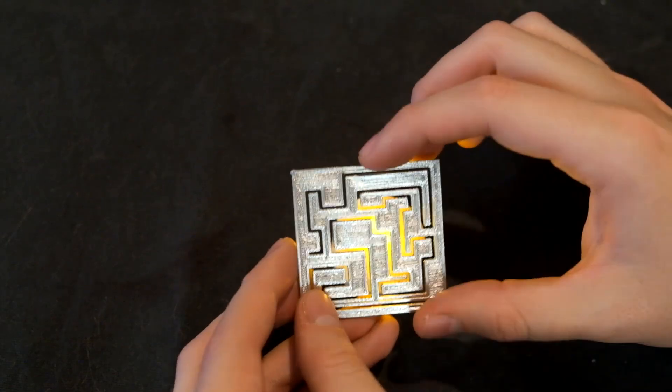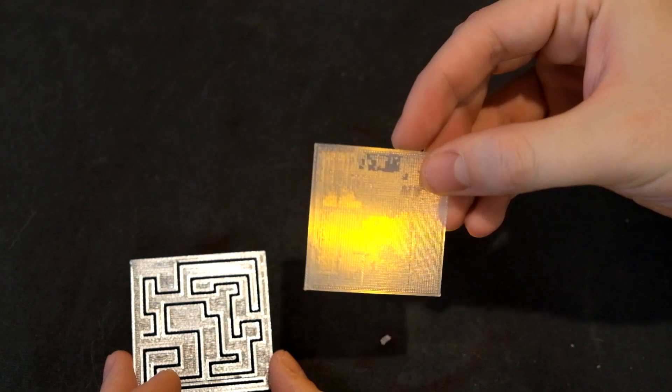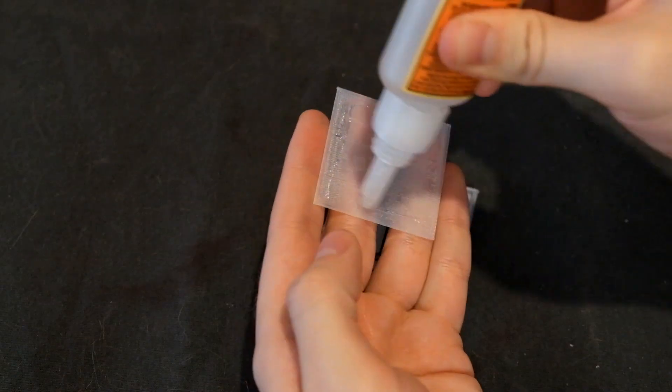I didn't like how the light was going through the lid, so I went back and 3D printed a piece to help diffuse the light, and then glued that to the lid.